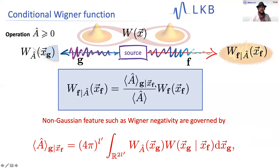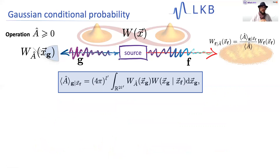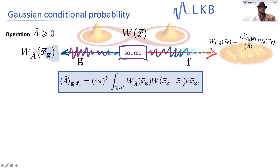Basically, all the non-Gaussian features are going to be contained in this conditional expectation value. So if we want to understand when the Wigner function that we have conditionally generated is negative, we actually have to understand when these conditional expectation values of the POVM element reach negative values. Everything is governed by these conditional expectation values. When we look at them more closely, there are two important players: one is the Wigner function of the POVM element itself. When this does not have any negative values, this is just a positive function times a positive function that we are integrating, so this will always be positive. We need Wigner negativity in the POVM element if we want to generate Wigner negativity in the conditional state.